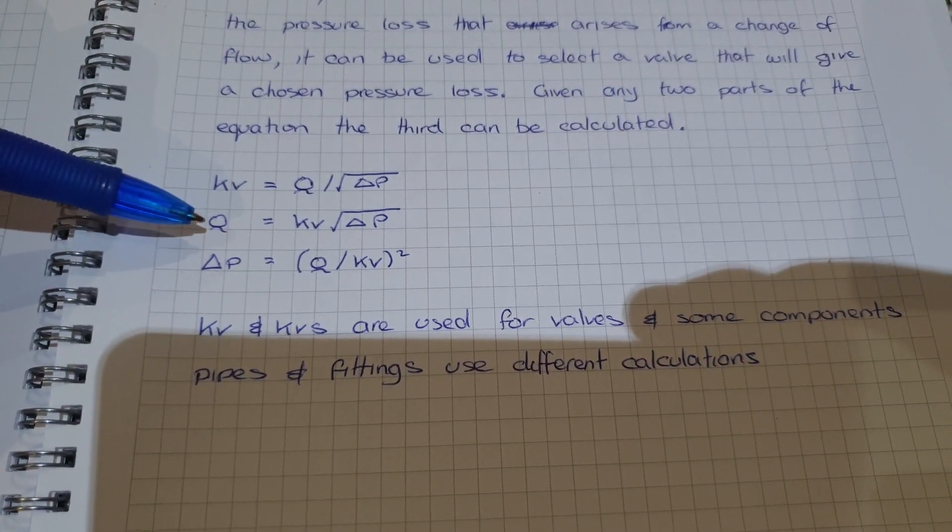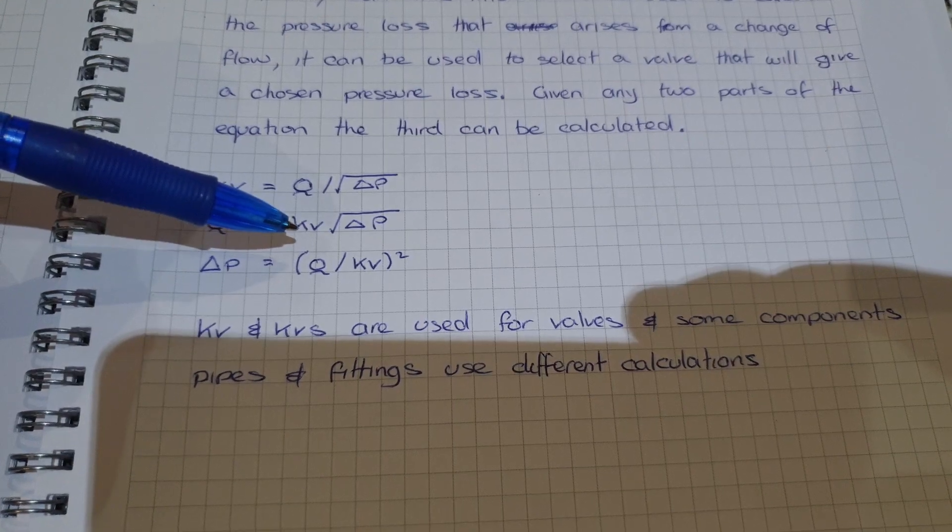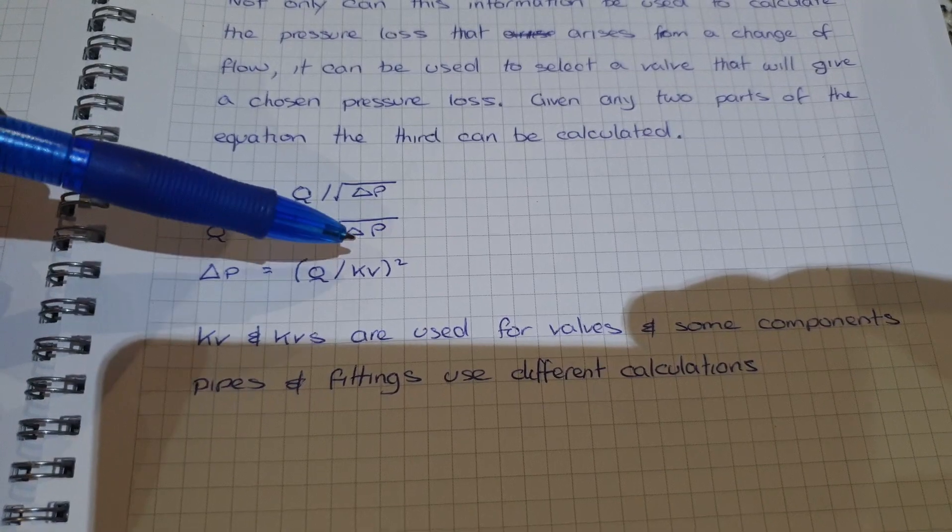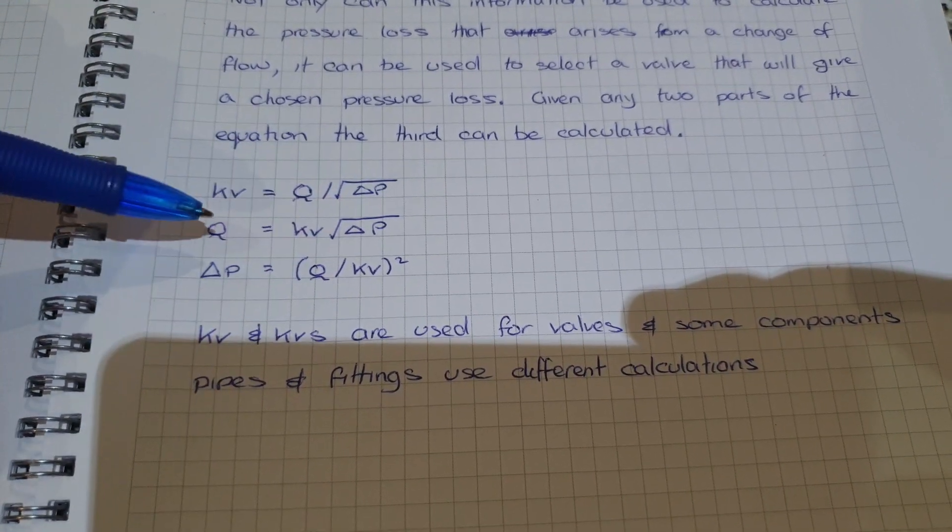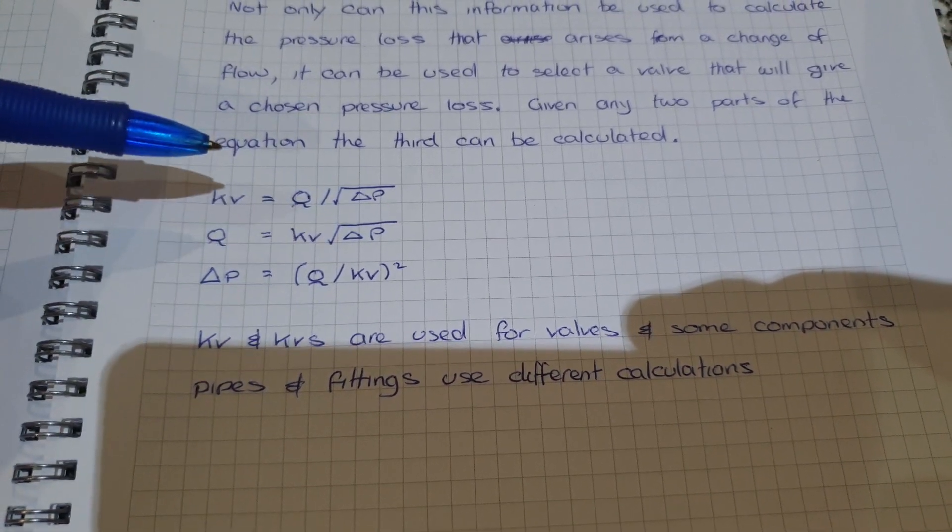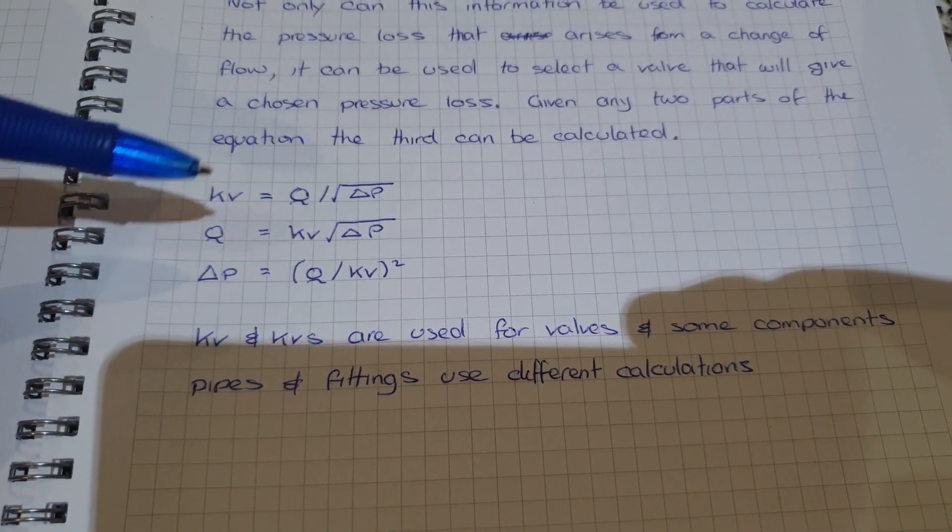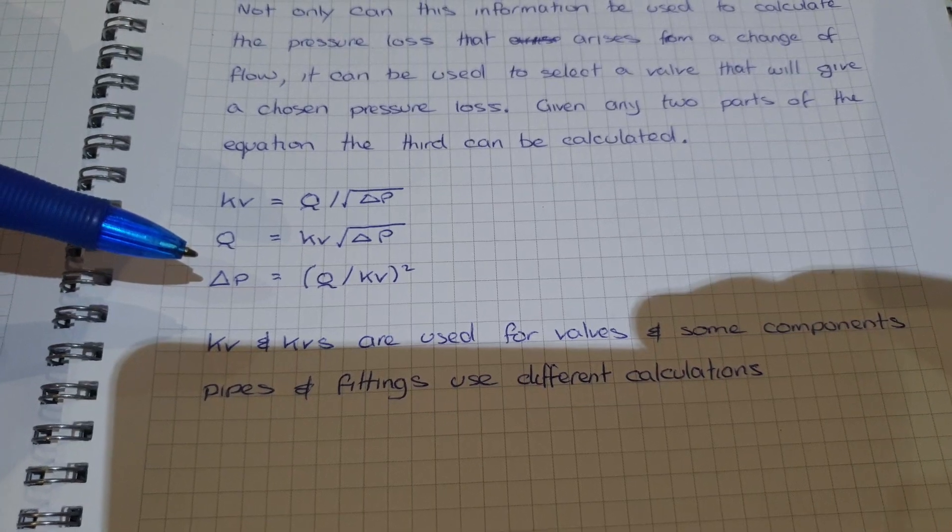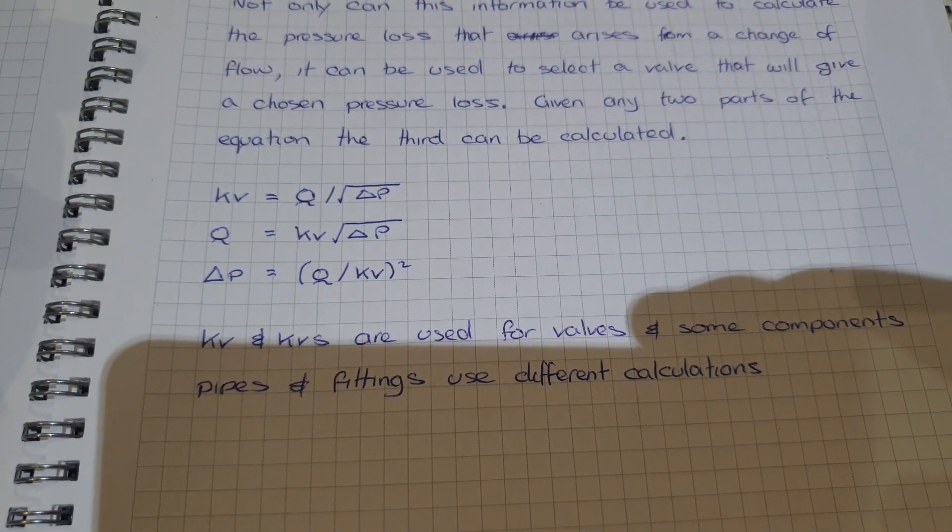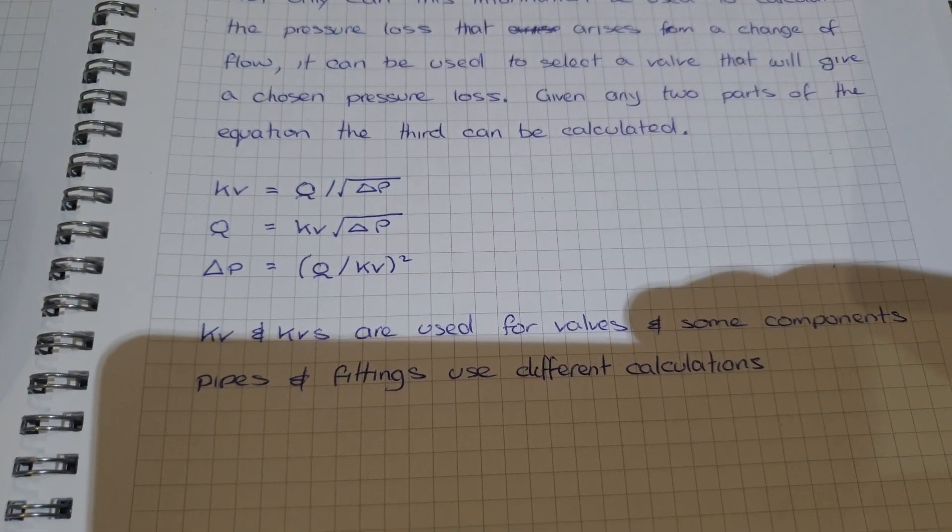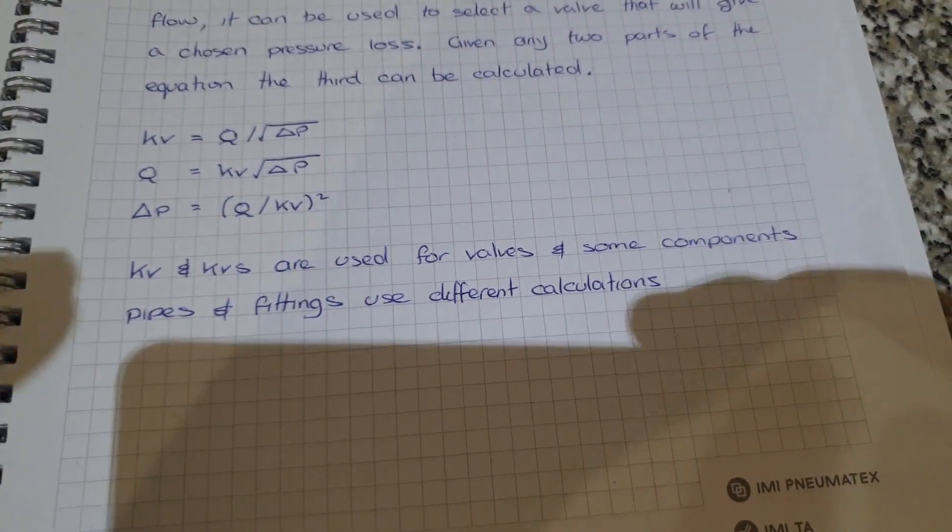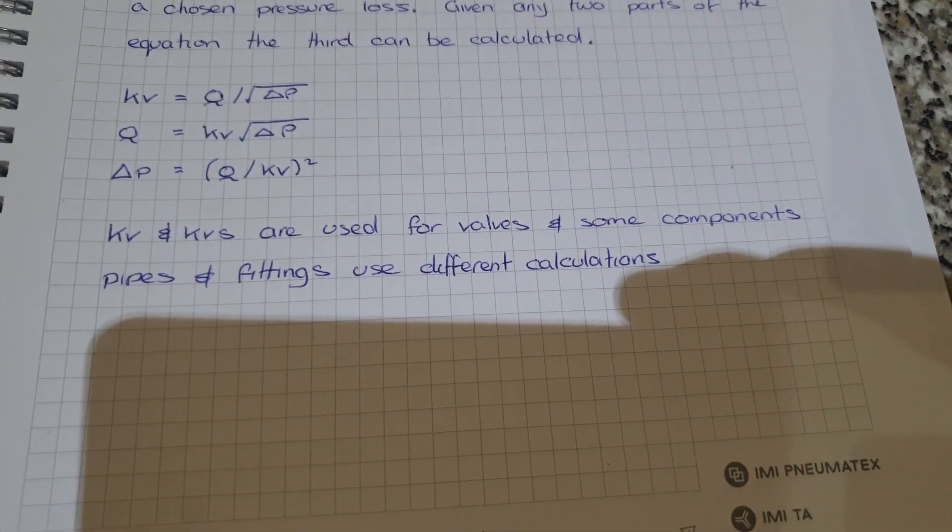If we wanted to know what the flow will be when we apply a valve of a given KV value, or we know the KV value and we change the flow, Q will equal the KV times the square root of delta P. And the other side of this: if we want to know what the delta P will be, we've got Q divided by KV value squared.